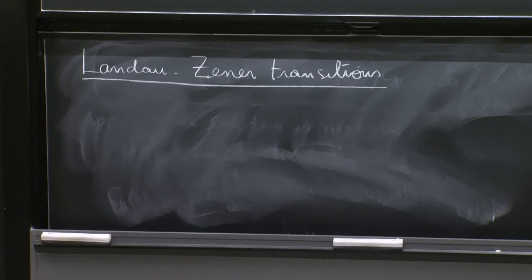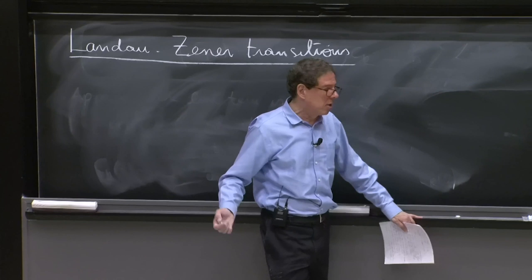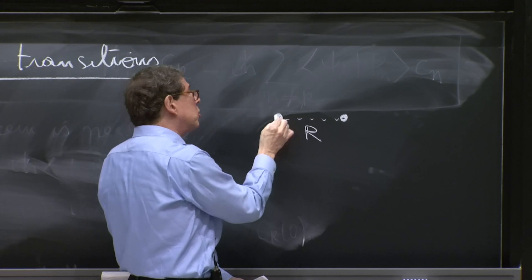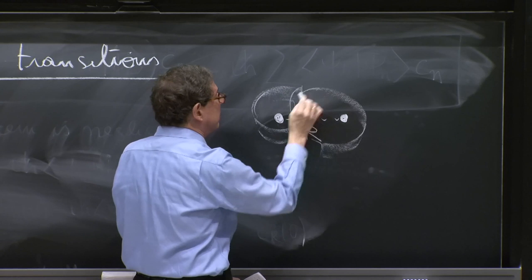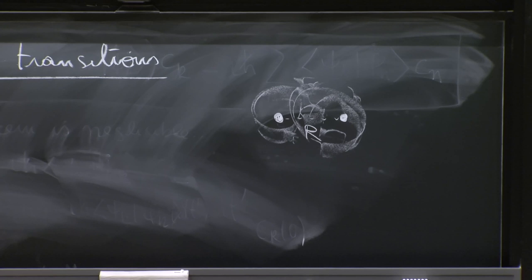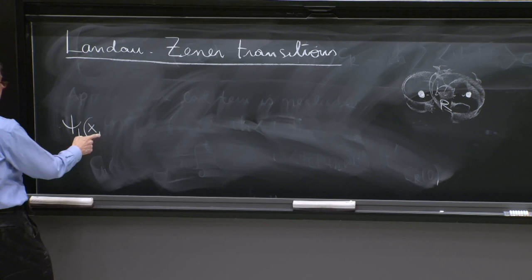Zener and Landau were interested in molecules. And some way of thinking of molecules is to think of nuclei as fixed, separated by some distance r. And then you assume they are fixed and they're separated by some distance r. And then you calculate what is the electronic configuration.